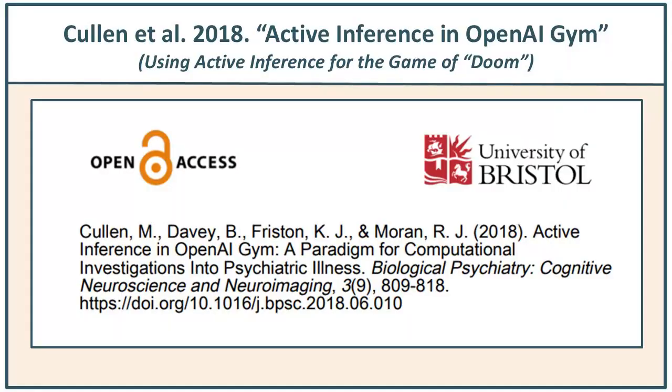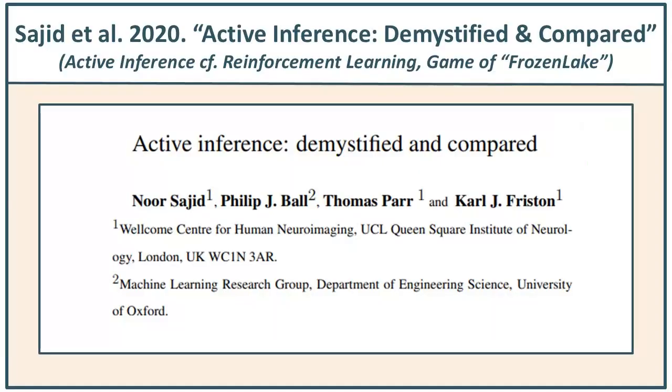Up until now, active inference has been suitable only for small-scale problems. As examples: in one work, I think it was 2018, they applied it to the game of Doom. More recently, in a review on active inference and reinforcement learning — a contrast and compare led by Dr. Noor Sajid and others — they used the game Frozen Lake for both active inference and reinforcement learning, showing advantages with the active inference approach, but it was still very small-scale.